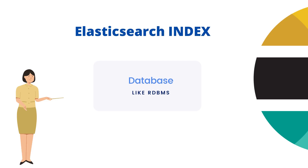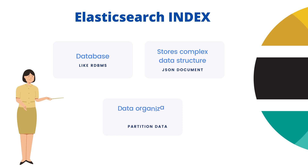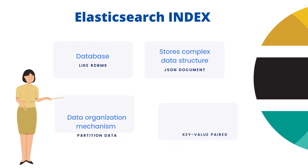An index is like a database in a relational database. It stores complex data structure in the form of JSON documents. So index is some type of data organization mechanism, which allows users to partition data in a certain way. It provides an optimized collection of documents, where each document has a field with key and value pair, which stores your data.